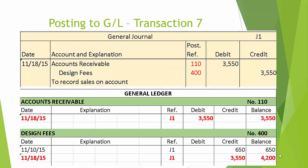Transaction number seven: accounts receivable debit of 3,550 is posted to general ledger account 110. Looking at the accounts receivable page in the general ledger, we see an entry for the date November 18, cross-reference J1, pointing back to page one of the journal, with a posting under the debit column of 3,550 and a new balance of 3,550 — a debit balance. The credit to design fees is posted in general ledger account 400. Looking at the general ledger page for design fees, we see an entry November 18, reference J1, 3,550 posting under the credit column, bringing the new total in design fees to 4,200. Design fees is a revenue account; therefore, it has a normal credit balance.